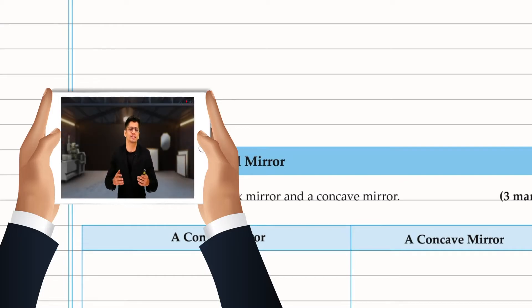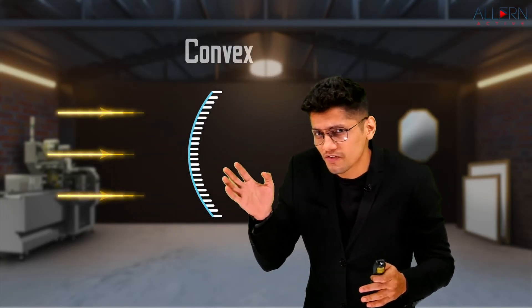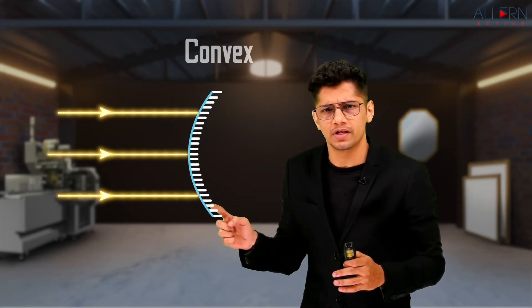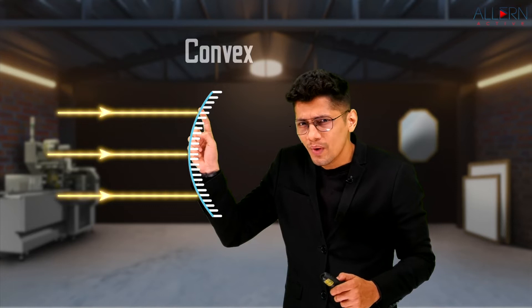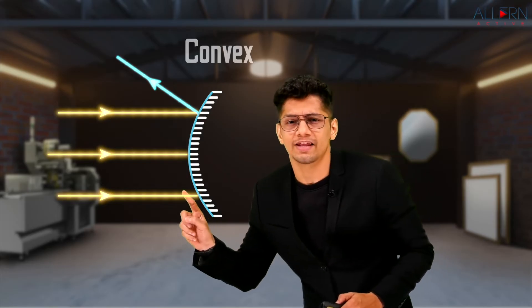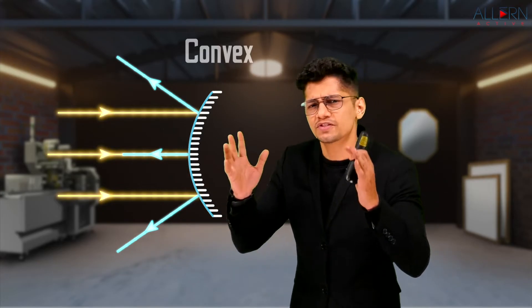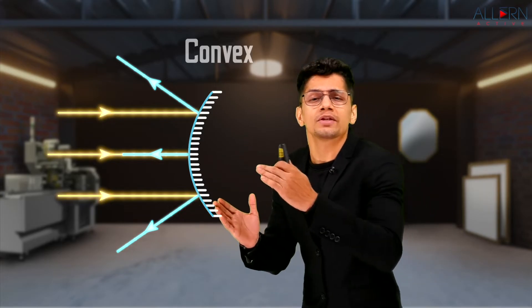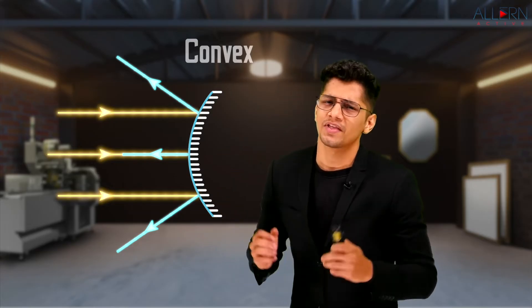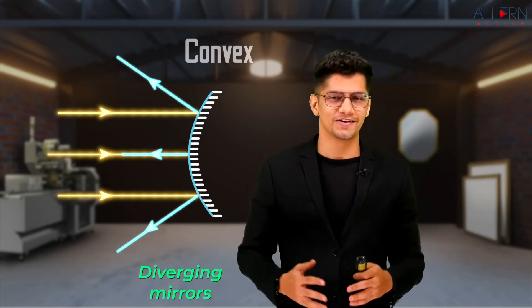Now that we have understood how spherical mirrors are made, we need to understand reflection of light from spherical mirrors. For that, we need to incident some parallel rays of light on both mirrors. Let us incident parallel rays of light on a convex mirror. Due to the shape of this mirror, this parallel ray of light will get reflected upward, this ray downward, and this particular ray will get reflected back in the same direction. If you see properly, all three rays are moving away from each other — this in technical terms is called diverging. So convex mirrors are diverging mirrors.